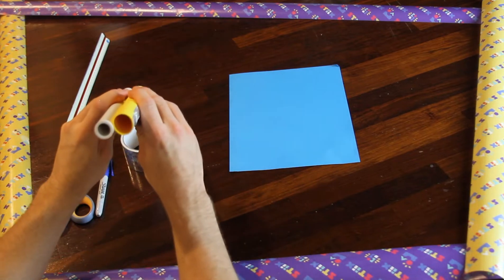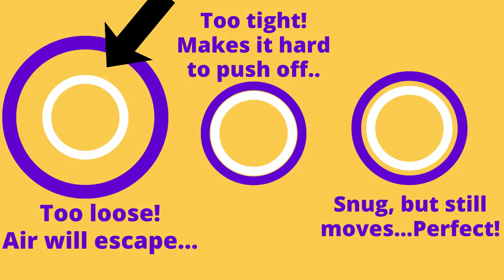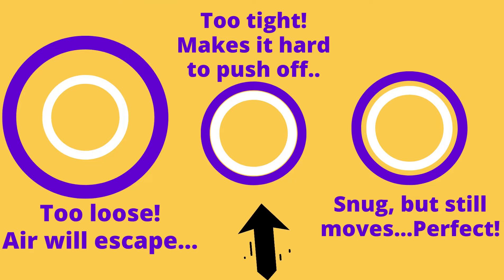Circling back to the fit of your rocket over the pipe, why is that so important? Well, if it's too loose, then a bunch of air is going to escape through that area. And if it's too tight, it's not going to have enough force to get off the pipe. That's why balancing a nice snug fit but still able to move is key for a successful flight.